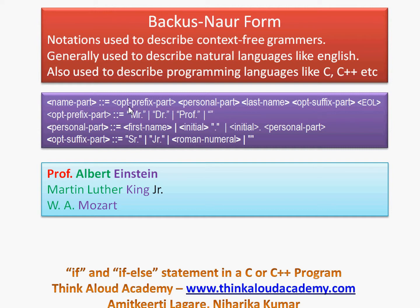Backus-Naur form gives a way of representing names in the form of proper syntax. The name of a person can have an optional prefix part, the personal part, the last name, and an optional suffix part. The optional prefix could be Mr., Doctor, Professor, or nothing. The personal part is your first name — it could be 'Martin Luther', 'Albert', or just an initial like 'W.A.' The suffix could be senior, junior, a Roman numeral, or nothing.